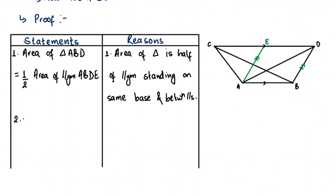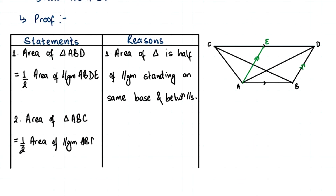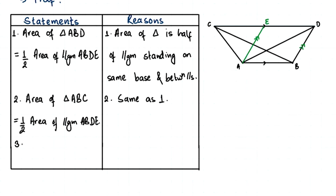Statement 2: the area of triangle ABC is also equal to half the area of parallelogram ABDE, for the same reason. Triangle ABC also stands on base AB and is between the parallel lines CD and AB. Since both the triangle and parallelogram stand on AB and between the same parallel lines, triangle ABC is also half of parallelogram ABDE.